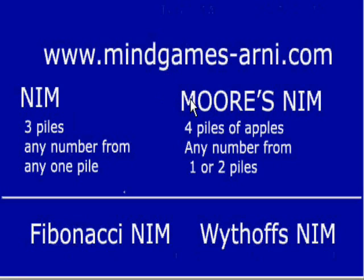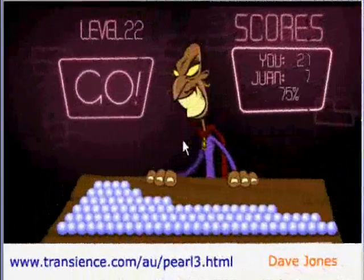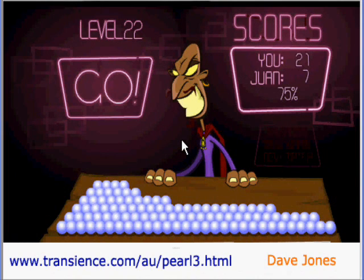In this site, you also find Mors NIM with 4 piles of apples, picking any number of apples for 1 or 2 piles, and here also, the same strategy applies. There are other 2 versions of NIM on the same site, but they require different strategies. The best site for the standard NIM is www.purs3html, which is done by my good friend Dave Jones.